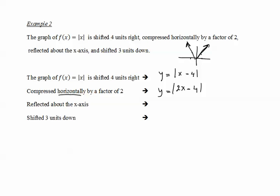Then we reflect about the x-axis. Reflection about the x-axis means for every y it becomes a negative y. So we take the previous expression and make it negative: y = -|2x - 4|. This is the reflection about the x-axis.